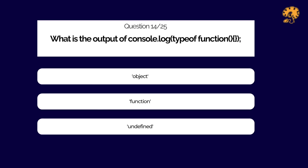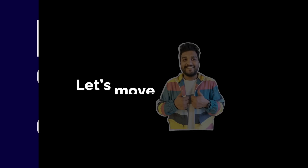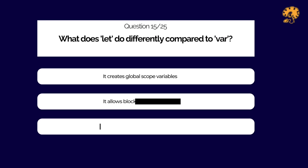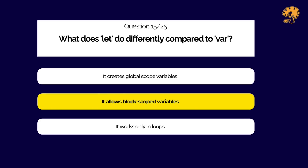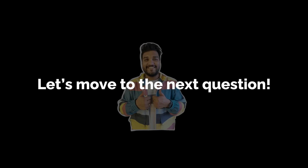What is the output of the following code snippet in JavaScript? What does 'let' do differently compared to 'var'?